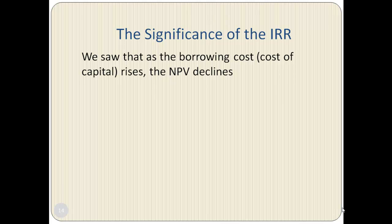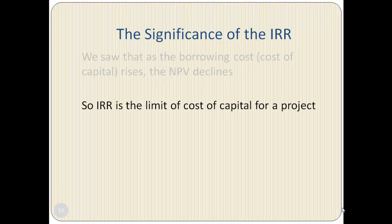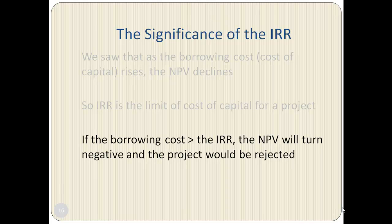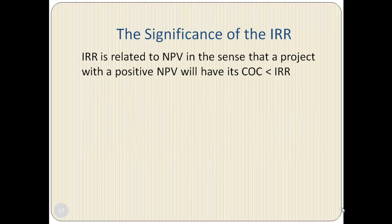Now let's discuss the importance of learning about the IRR. We saw that as the borrowing cost rises, the NPV declines. Thus, IRR is the limit of cost of capital for a project. If the borrowing cost exceeds the IRR, the NPV will turn negative and the project would be rejected.